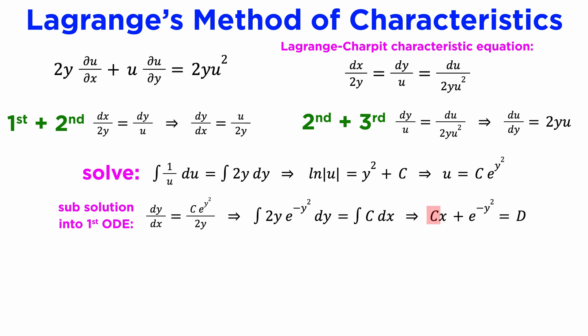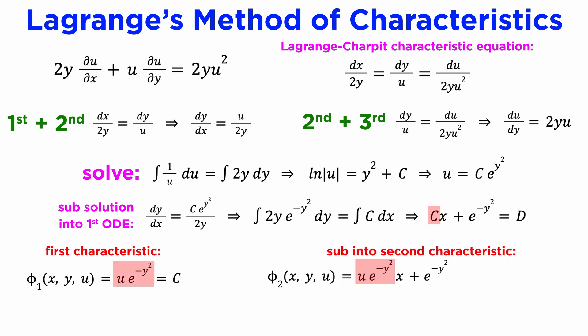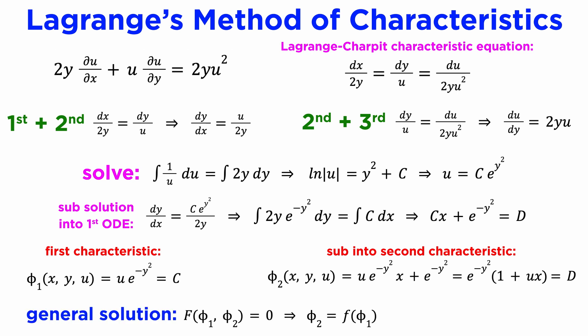We can eliminate the constant c in the second equation by rearranging the first and substituting in c equals ue^(−y²). These give our two linearly independent characteristics: φ₁ equals ue^(−y²) and φ₂ equals e^(−y²)(1 + ux). The general solution is then φ₂ equals f(φ₁), and so we get this as our answer.